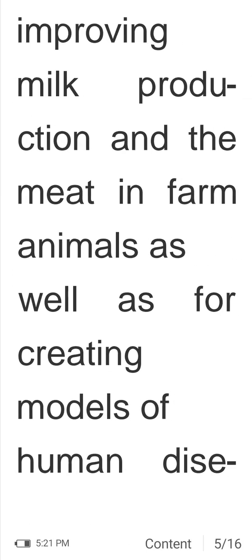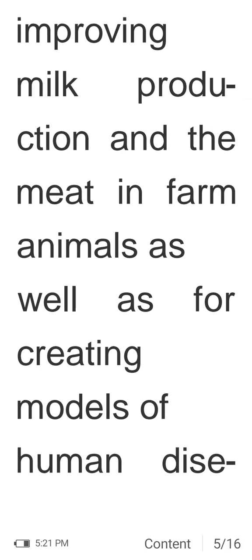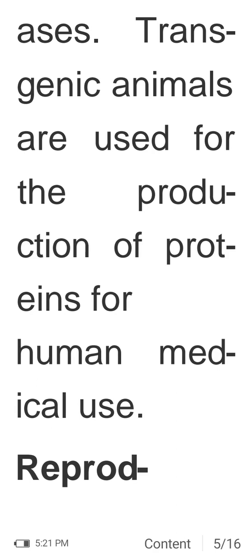Transgenic technologies are used for improving milk production and meat quality in farm animals, as well as for creating models of human diseases. Transgenic animals are used for the production of proteins for human medical use.